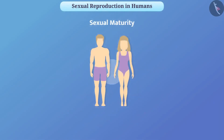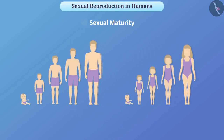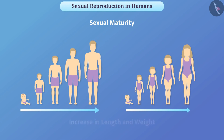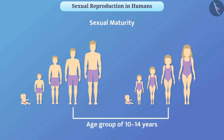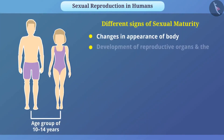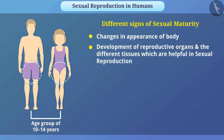Sexual maturity of parents is necessary in sexual reproduction. As a person grows in age, many physical changes occur such as increase in length and weight. In the context of sexual maturity, boys and girls undergo various changes in the age group of 10 to 14 years, such as appearance of body, development of reproductive organs, and development of the different tissues helpful in sexual reproduction.